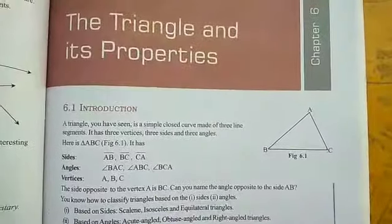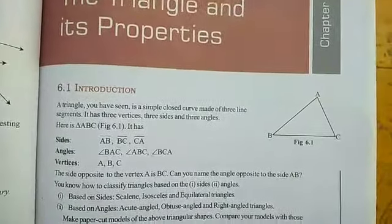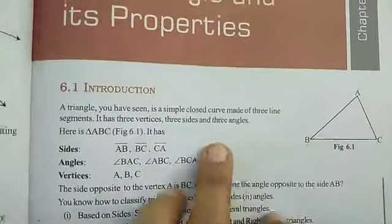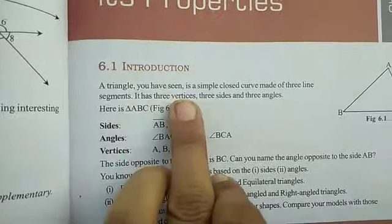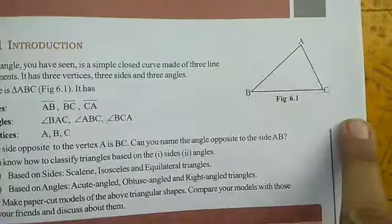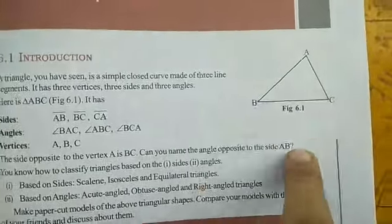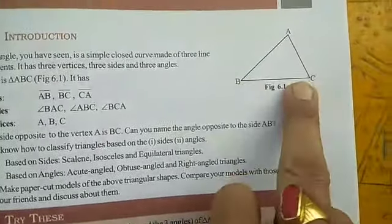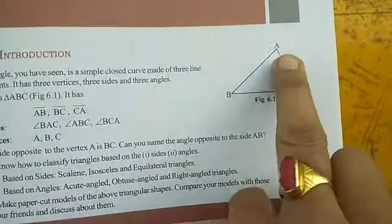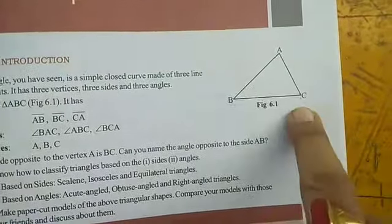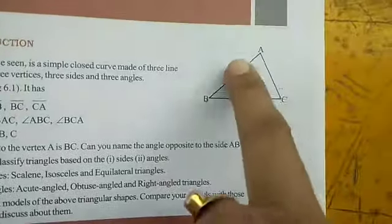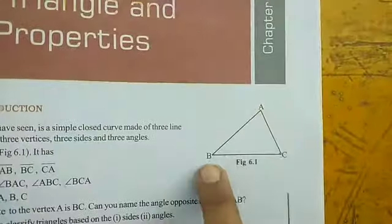We are going to do chapter number six, that is Triangles and its Properties. Starting with the introduction: a triangle is a simple closed curve made of three line segments. It has three vertices, three sides, and three angles. Triangle ABC has three sides: AB, BC, and AC.